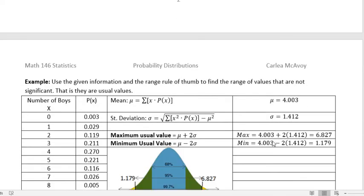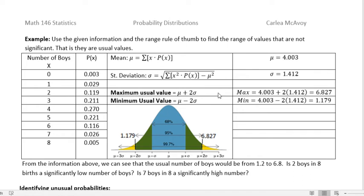Let's take a look at this one. We'll use the range rule of thumb to find the range of values that are not significant—the usual values. We want to know the maximum usual and minimum usual. If you were in StatCrunch, you could use it to find the mean and standard deviation, which is what I did. But I put the formula here too, so you can see how that number is derived.